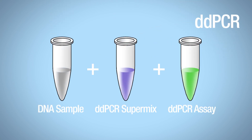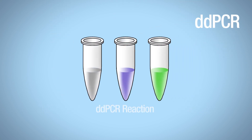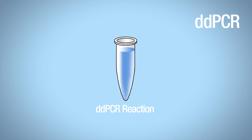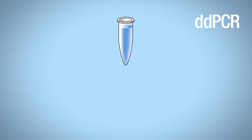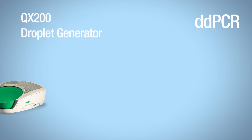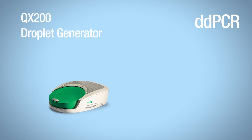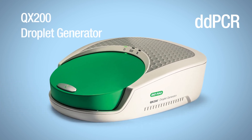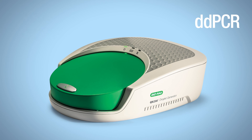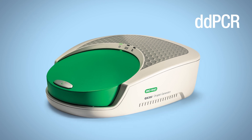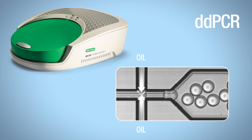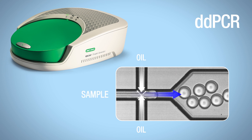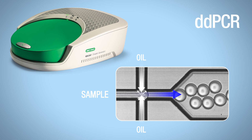With Droplet Digital PCR, every sample is divided into many thousands of single nanoliter droplets, and PCR is then performed in each individual droplet. The QX200 Droplet Generator transforms samples into droplets using microfluidic technology. Samples are combined with oil to create a droplet emulsion, and every droplet becomes a tiny reaction with a reaction mix and any target that might be present.